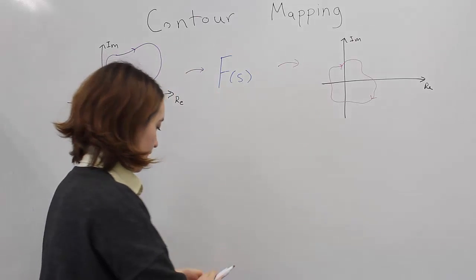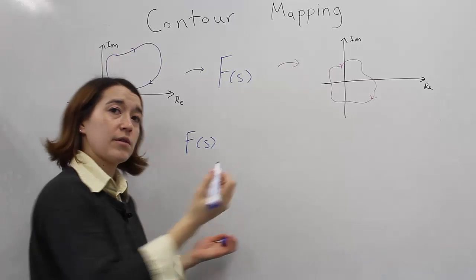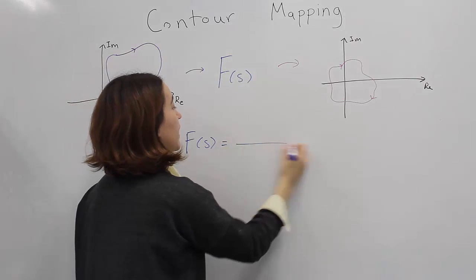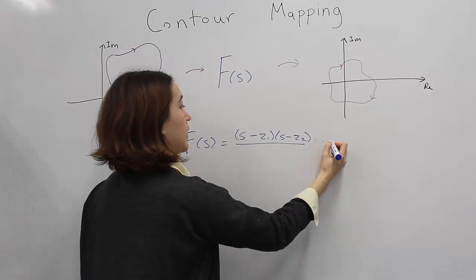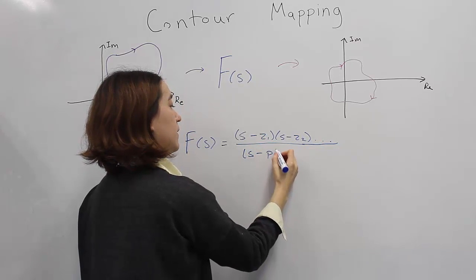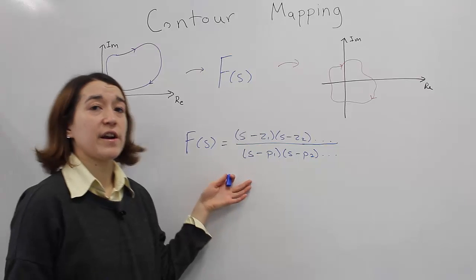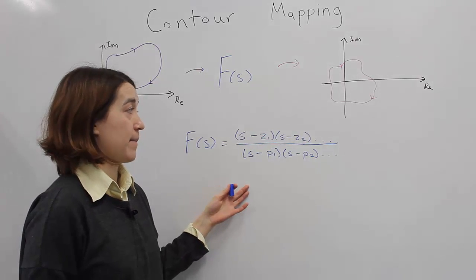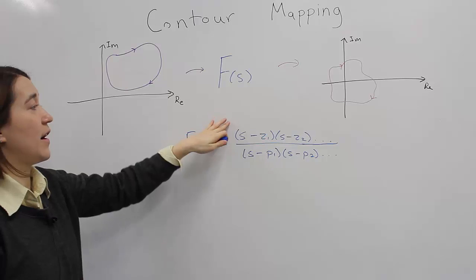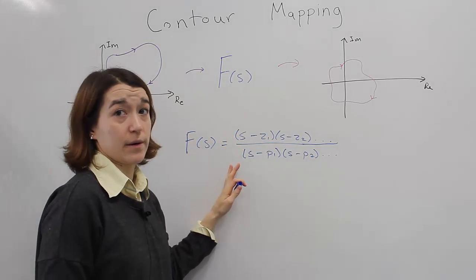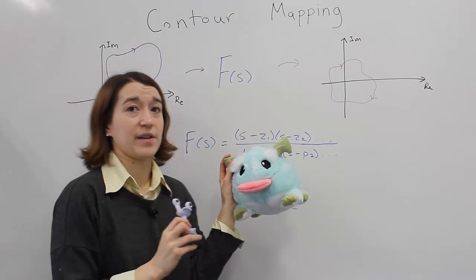The function can be written just like before. So F of S, a transfer function, can be written as a set of zeros — S minus Z1, S minus Z2, and so on — and a set of poles — S minus P1, P2, and so on. We're going to use contour mapping to look at how the contour will change based on the position and number of poles and zeros. Poro and Valerie will help us with some basic contour mapping examples.